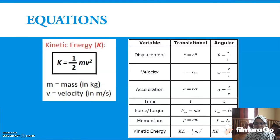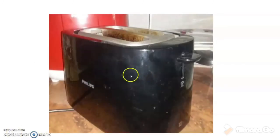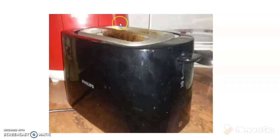Now let us see an example using the kinetic energy equation. We will be looking at a real-life example of kinetics of a particle: the toaster. When we want to toast bread, we first slide one slice of bread into each toaster slot, set the level of toasting, and then pull the lever down to start the toasting cycle.